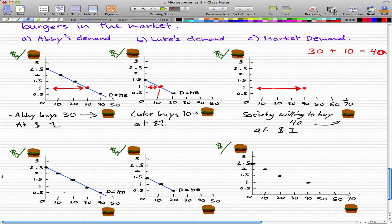At this last point, at $0.50, Abby is willing to buy a 40th burger for $0.50, and Luke is willing to buy his 20th burger for $0.50. Now, 40 plus 20 is equal to 60, so that's where we'll get our point.